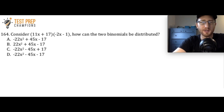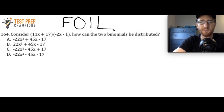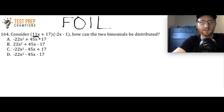Consider (11x + 17)(−2x − 1). How could the two binomials be distributed? Pause the video and try to figure this out. To solve this, you use the FOIL method. F stands for First: multiply the first terms of each binomial — 11x times negative 2x — giving negative 22x squared. It's really important to account for the negative sign.